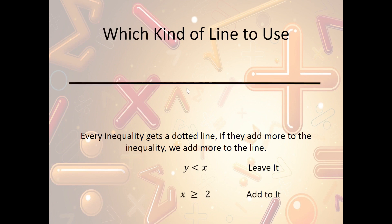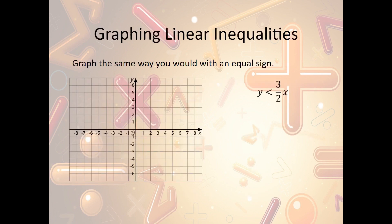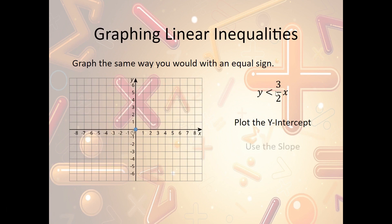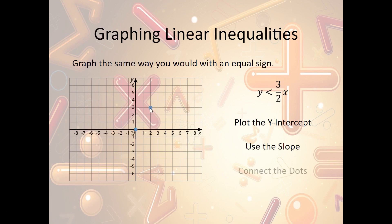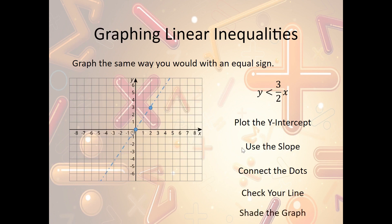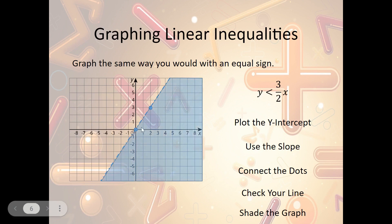Here's an example: y is less than (3/2)x. We plot the y-intercept first — none is listed, so it's zero. I go to zero and plot my point. My slope is three-halves, so I go up 3 to the right 2 and plot my point. Now I check the correct line type — they didn't add anything extra, so neither do I — it should be a dotted line. Then I shade: y is smaller than the line, so I go along the y-axis, find where it meets the line, and shade everything below the line.